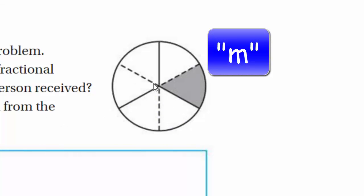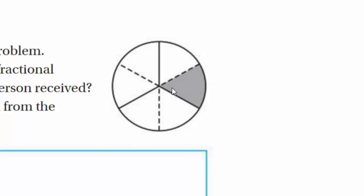Noah divided the circle into six parts. If you had one third and divided it by two, that makes sense — one out of six equal pieces is one sixth. Yes, Noah divided the circle into three equal parts to represent thirds, then divided each third in half. He shaded half of one third, so the diagram represents one third divided by two, which equals one sixth.